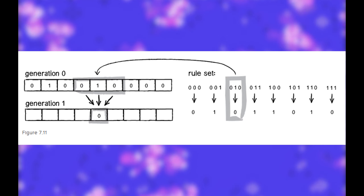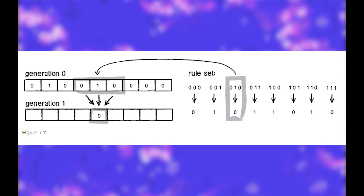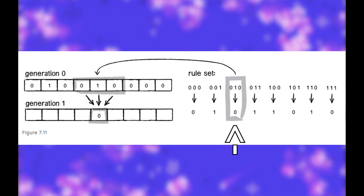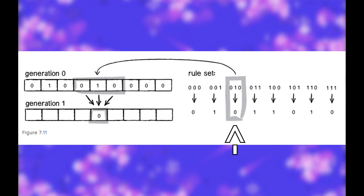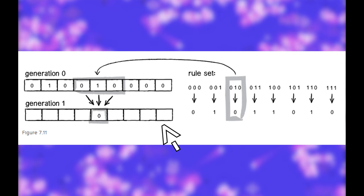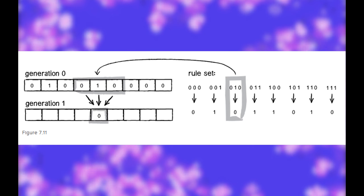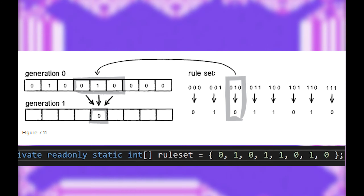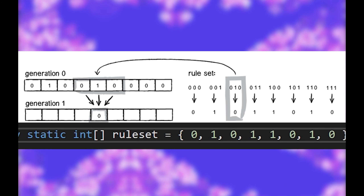We have the power to say, if this is the case, then we want the cell to die in the next generation, or live — whatever you like. These are called rule sets: an integer array with eight slots for the eight possible configurations.